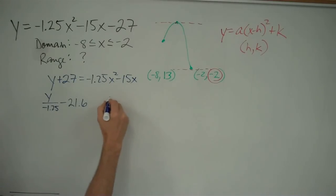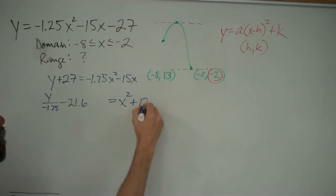And that's going to equal, let me leave a little space there. That's going to equal, we're dividing by negative 1.25, so I just get x squared. Negative 15x divided by negative 1.25 is positive 12x.